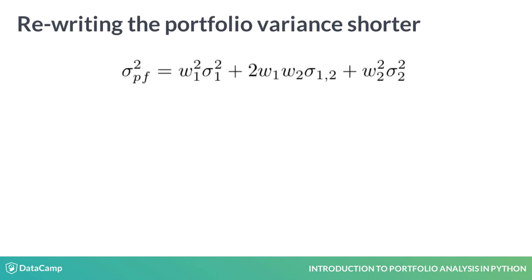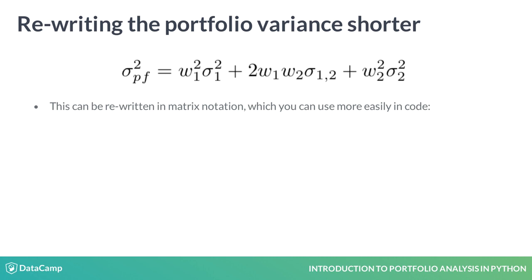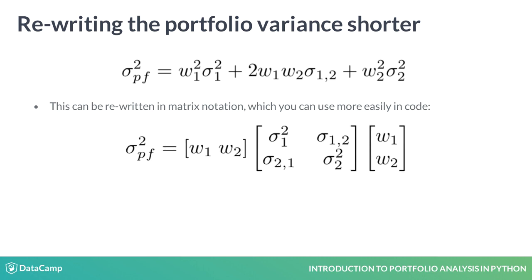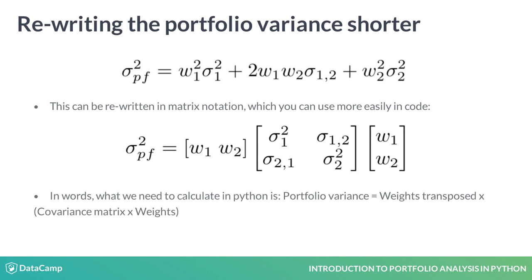Let's rewrite the formula and insert the covariance instead of the correlation times the variances. Taking that last equation, it is long and difficult to work with. Hence, we can write it shorter and smarter using matrix notation. It then becomes weights transposed times the covariance matrix times the weights. The covariance matrix depicted here in the middle contains the variances on the diagonal and the covariances between asset 1 and 2 on the off-diagonal terms.